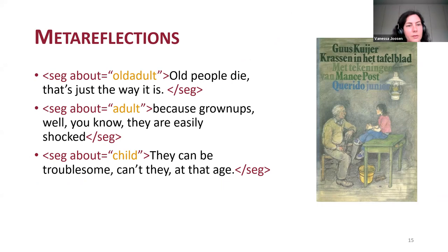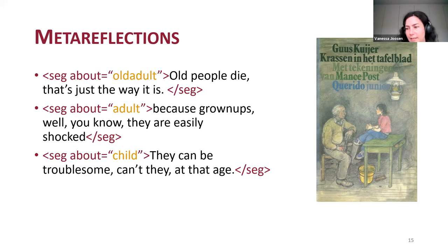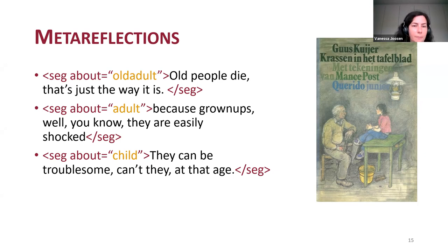What does this annotation process involve? To the text we add various tags, and for those familiar with XML tagging, these tags function as little labels that help to single out specific aspects of a text in a later stage. One of the things we're interested in are the explicit age norms that are voiced in the text — we call these meta-reflections: passages in which an age norm is made explicit, or where generalizing thoughts about a certain age or life stage are expressed. We put a so-called 'seg-about' tag around them that specifies the age category concerned. For example, from Guus Kuijer's Krassen in het Tafelblad (Scratches in the Table Leaf), meta-reflections on old age, adulthood, and childhood respectively — such as 'old people die, that's just the way it is' — receive the seg-about tag indicating the relevant age category.